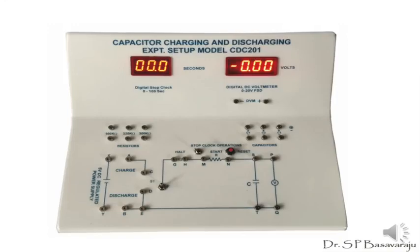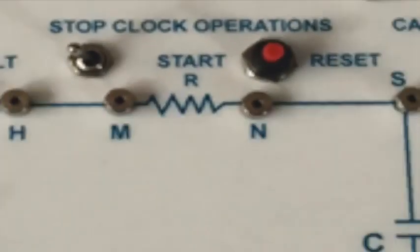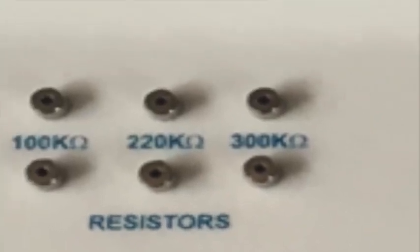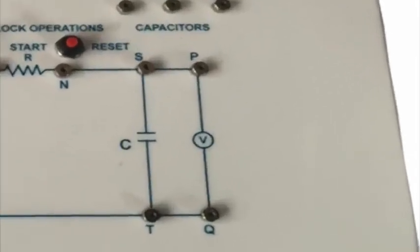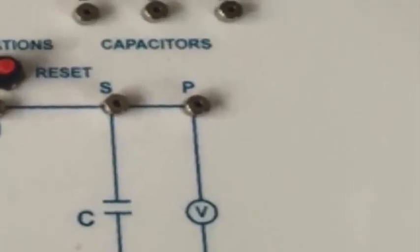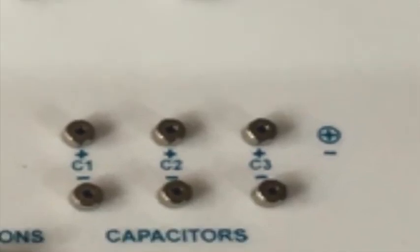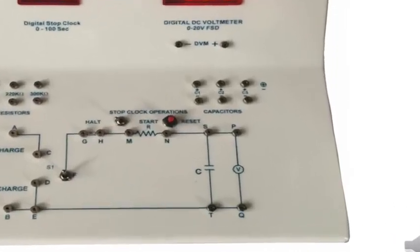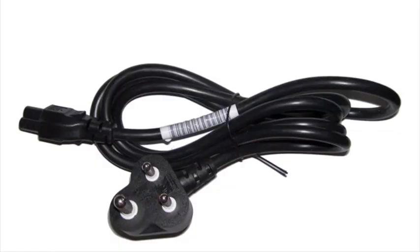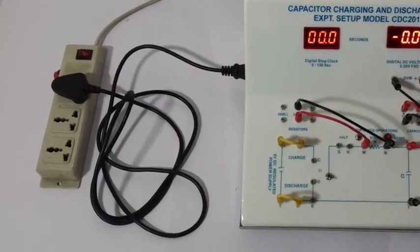Between M and N, though a resistance mark R is shown, the resistor is not inside the box — it has to be connected from outside the circuit. A choice is made available so that you can choose any one from three resistors and connect it to the circuit. Similarly, there is no capacitor already between S and T in the circuit; you can choose one among three capacitors and connect it. Likewise, the voltmeter is to be connected from above to the two terminals P and Q. This is the power cord connecting the instrument to the mains supply.